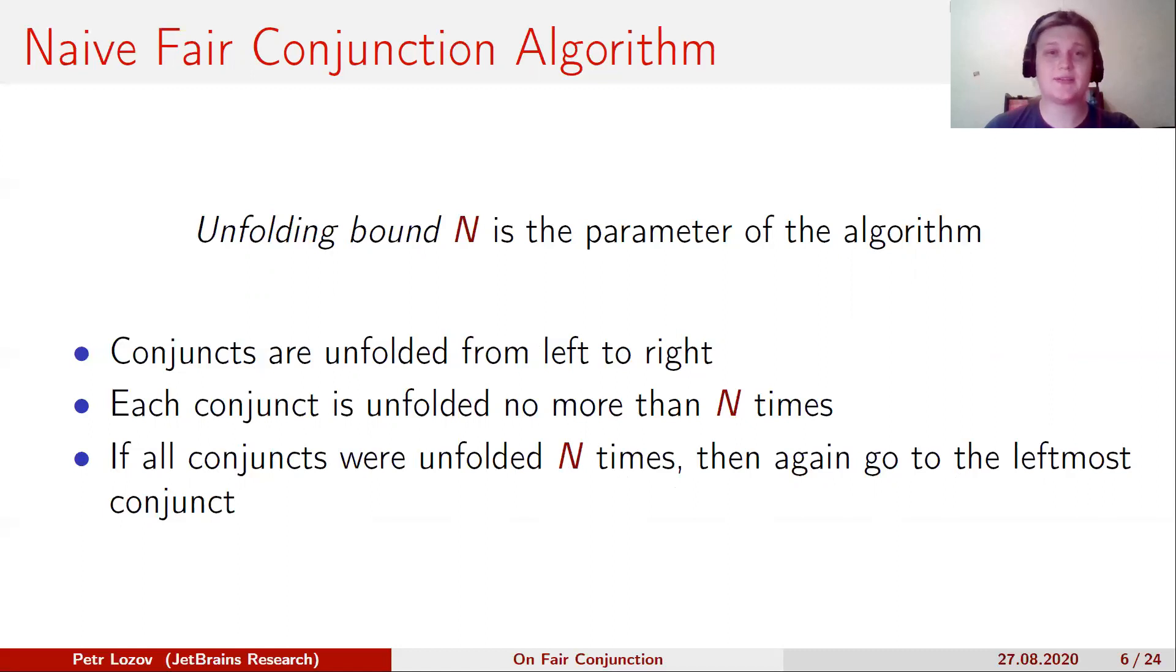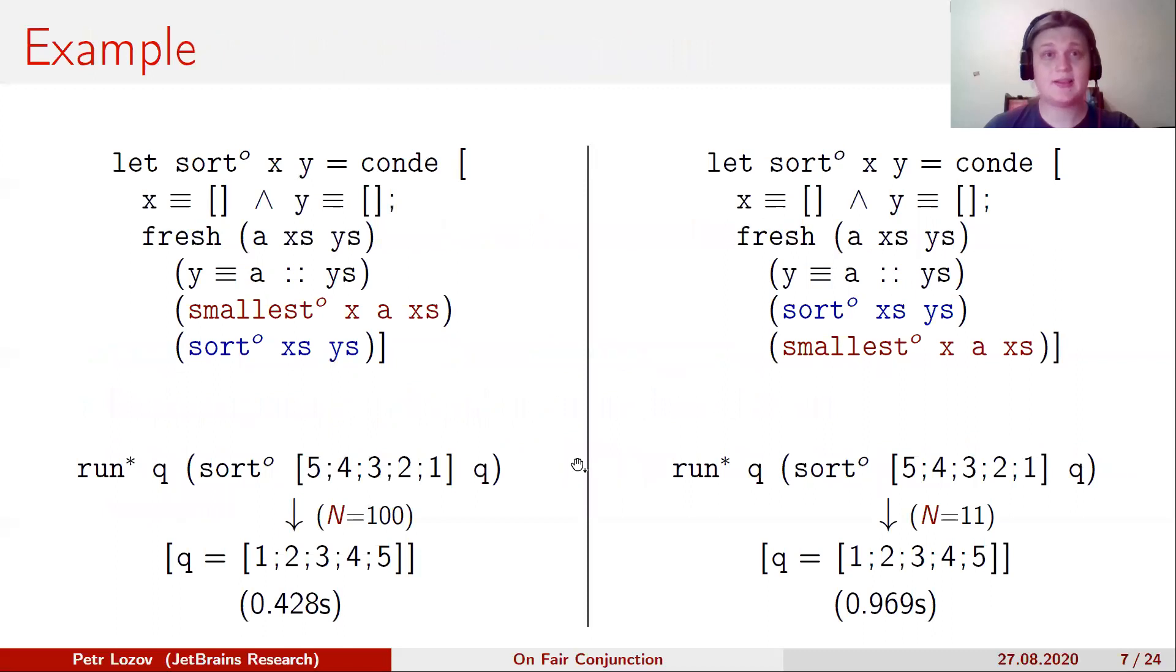Let's go back to our example. Now, the query for all answers converges in both cases. Moreover, in the pessimistic case, we get a huge performance improvement for N equals 11.